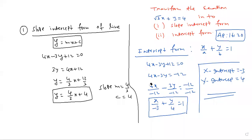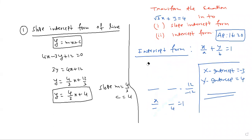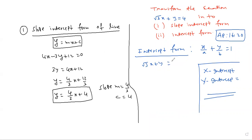Root 3x plus y is equal to 4. First, I am writing the intercept form. So, root 3x plus y is equal to 4 — divide by 4 on both sides. Root 3x by 4 plus y by 4 is 4 by 4, which is 1.